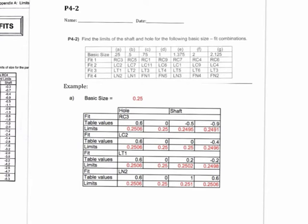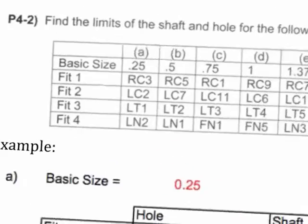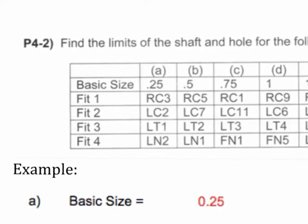The example from the homework is shown here on the screen. If we zoom in, the example is for column A, which is a basic fit of .25. That means the shaft and hole pair combination is going to have a basic size of about 0.25 inches. This is for inches.